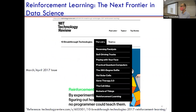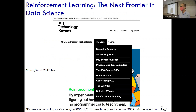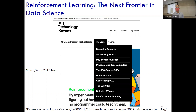Let me front-load a teaser of why we're looking at reinforcement learning. It seems promising today. A magazine back in 2017 called reinforcement learning a big breakthrough technology. It hasn't made as much of a breakthrough relative to, say, transformers, but there's still a lot of promise, because it really marries decision making and forecasting.